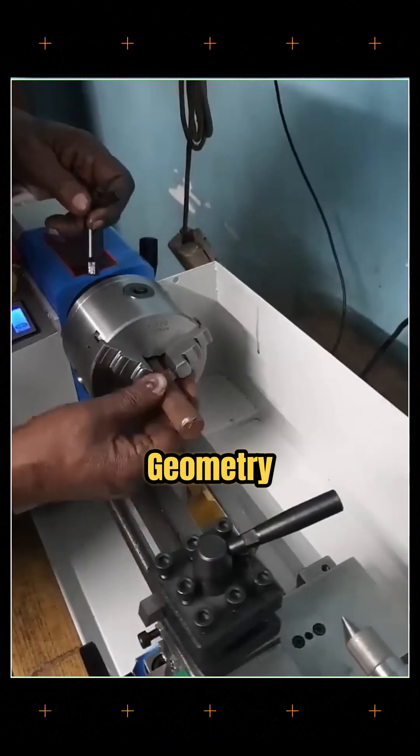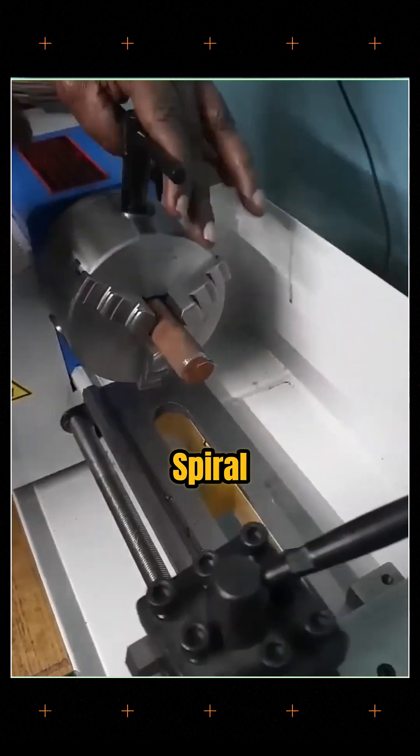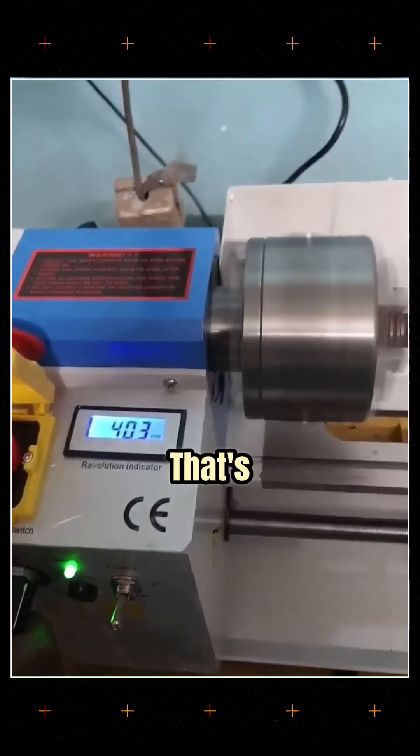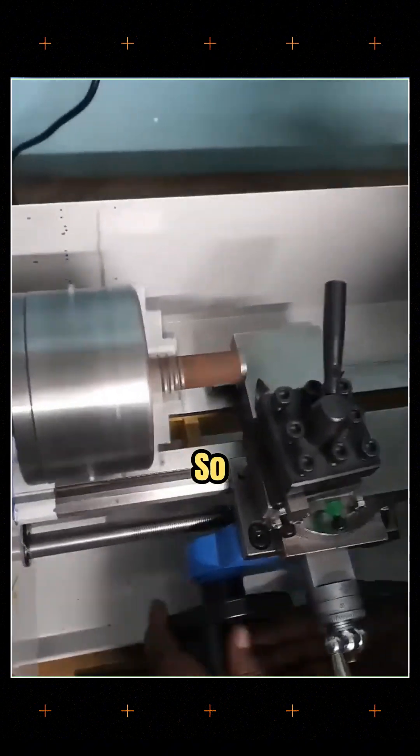And thanks to its geometry, every point on this spiral moves away from the center at an equal rate. That's why the jaws of the chuck move so smoothly, so perfectly synchronized.